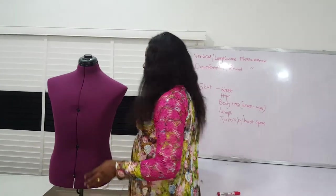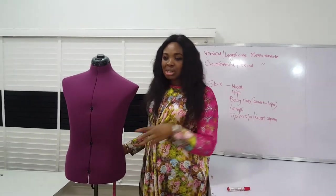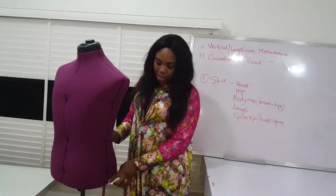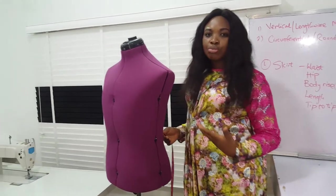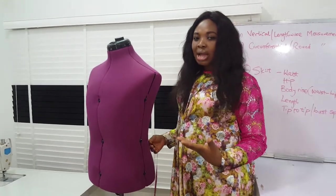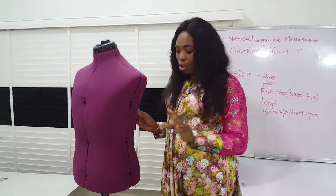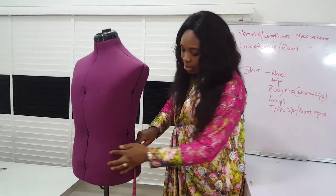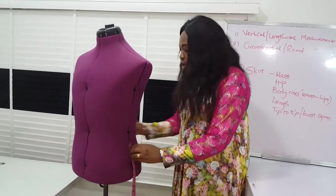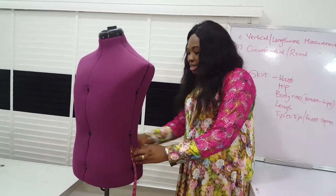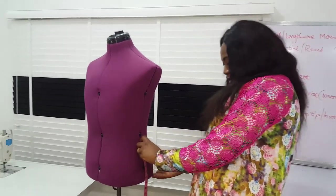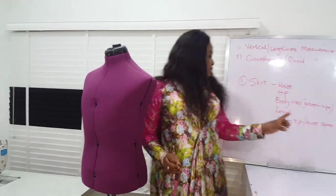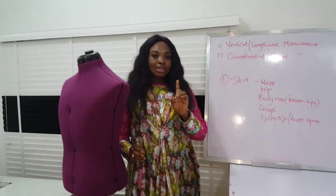The body rise is a lengthwise measurement — that's the distance from the waist to the hip. Because some people's hip tends to be lower, you can't use a standard measurement for everyone. You should take the measurement from where your skirt sits — that's your abdomen — down to the fullest part of your hip. That's the body rise, which is a lengthwise measurement.